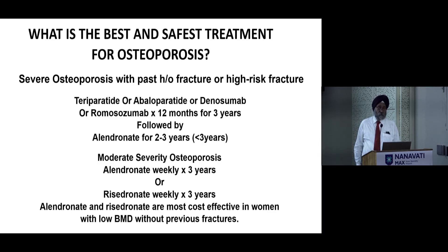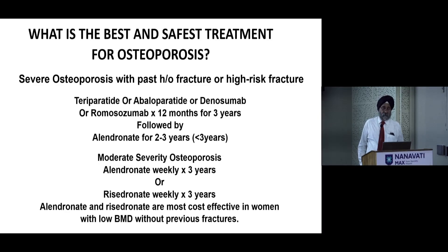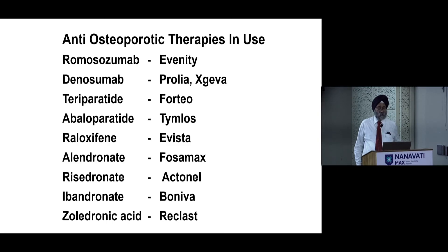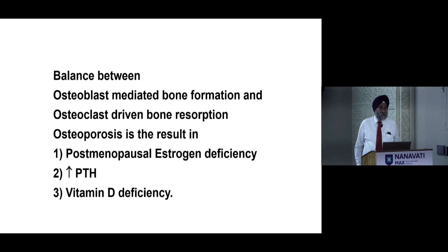The best and safest treatment algorithm is: teriparatide, abaloparatide, denosumab, or romosozumab for 12 months up to three years, followed by alendronate for two to three years — the whole course should be less than three years. For moderate severity osteoporosis: alendronate weekly for three years or risedronate weekly for three years. Alendronate and risedronate are the most cost-effective options. Contraindications include age under 18, pregnancy, breastfeeding, severe CKD, and dialysis.